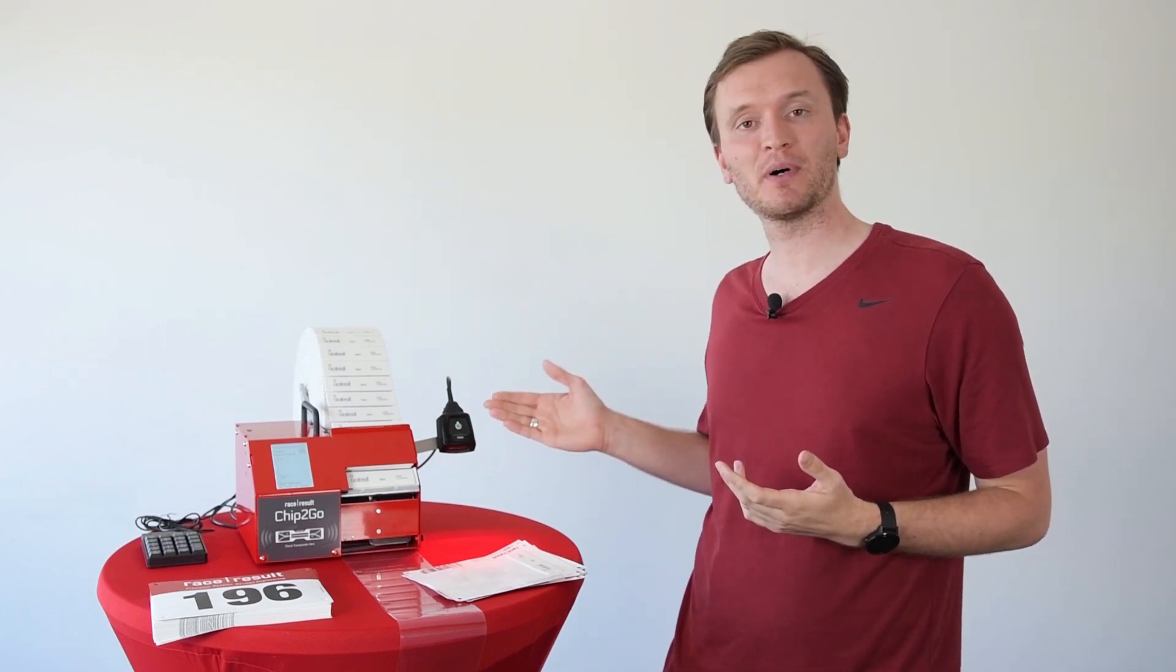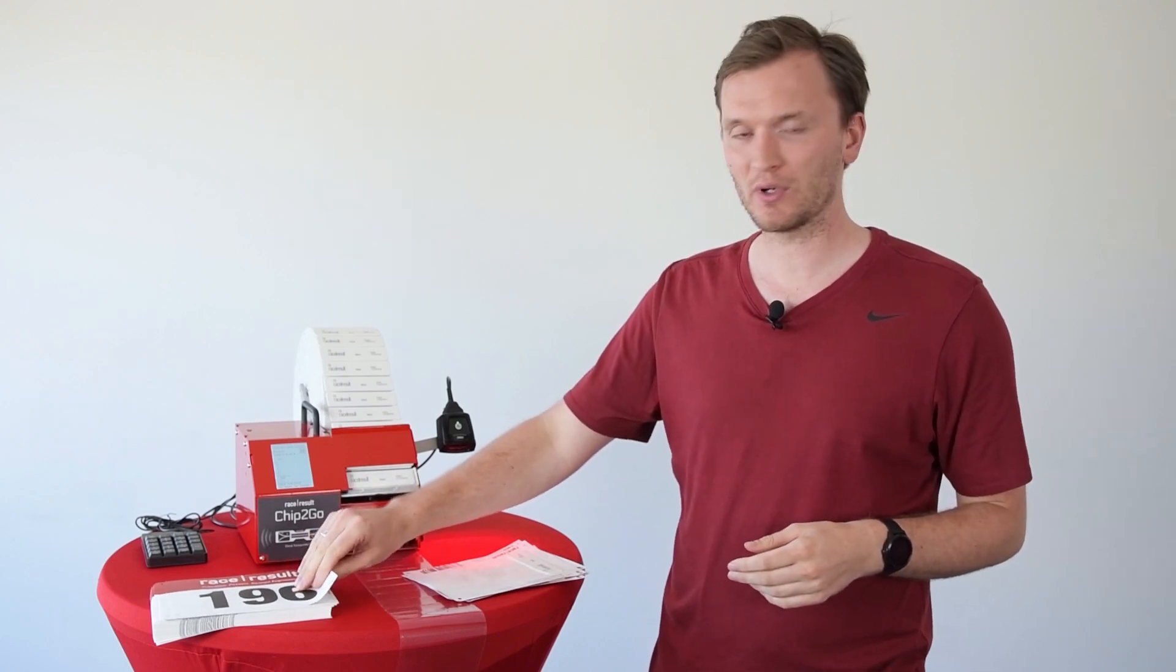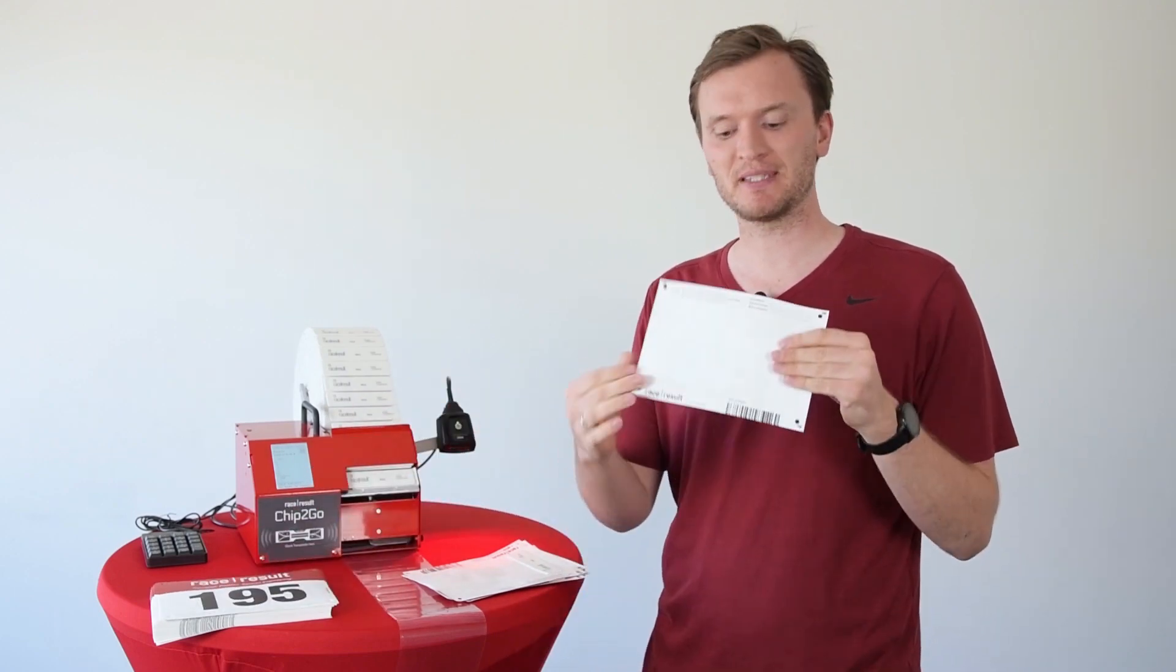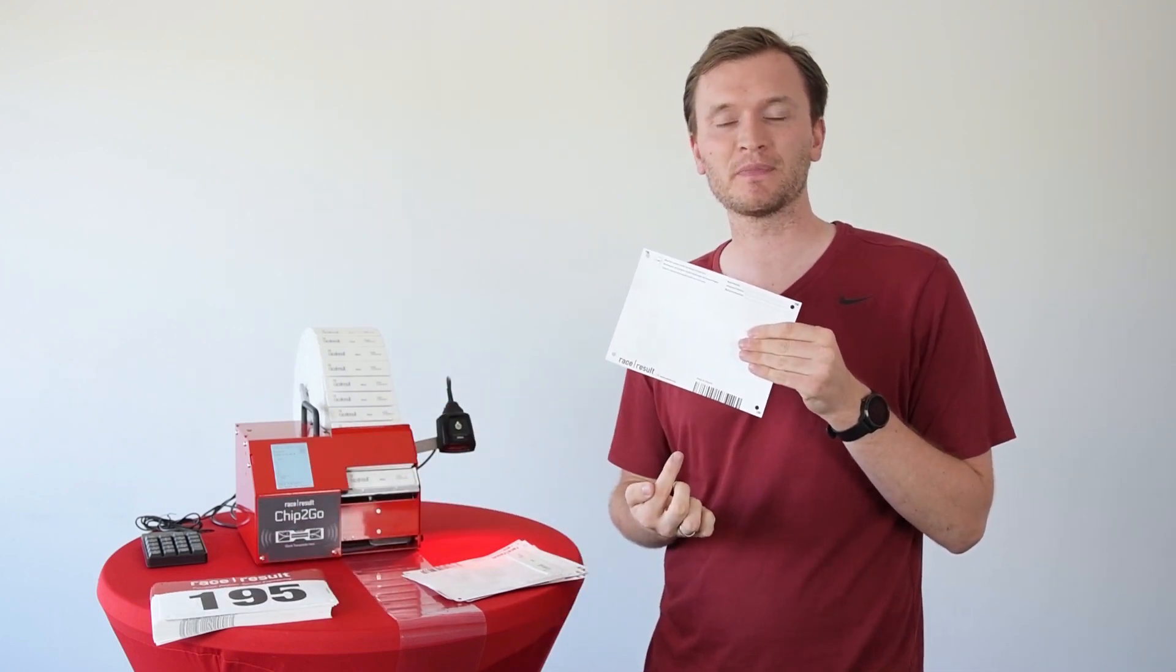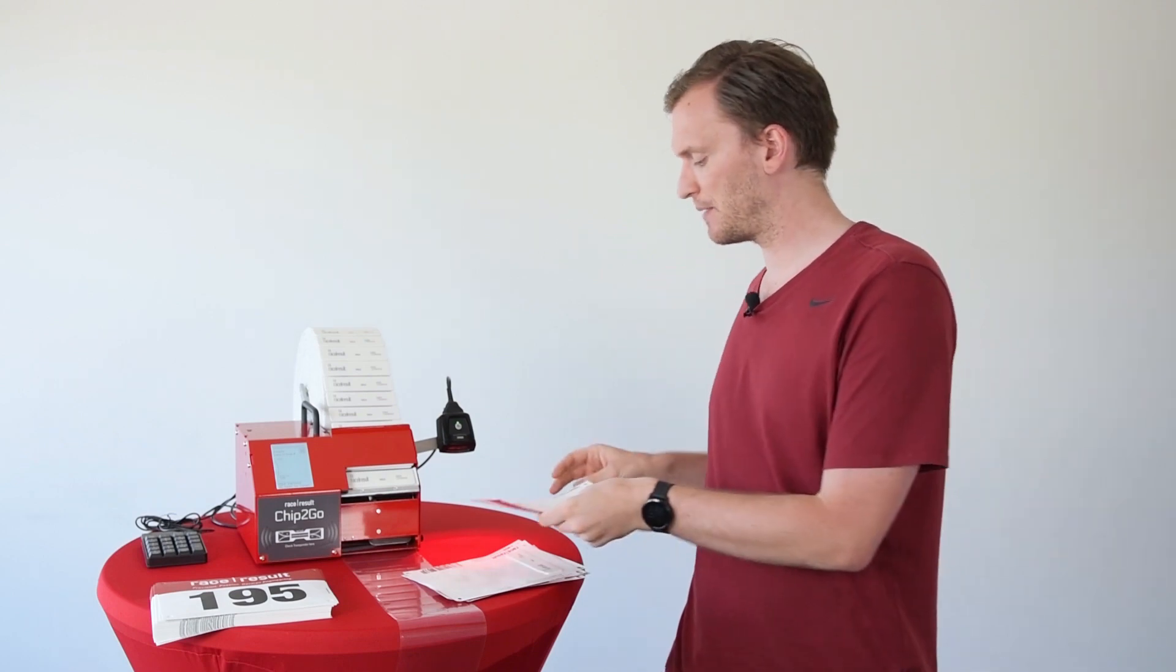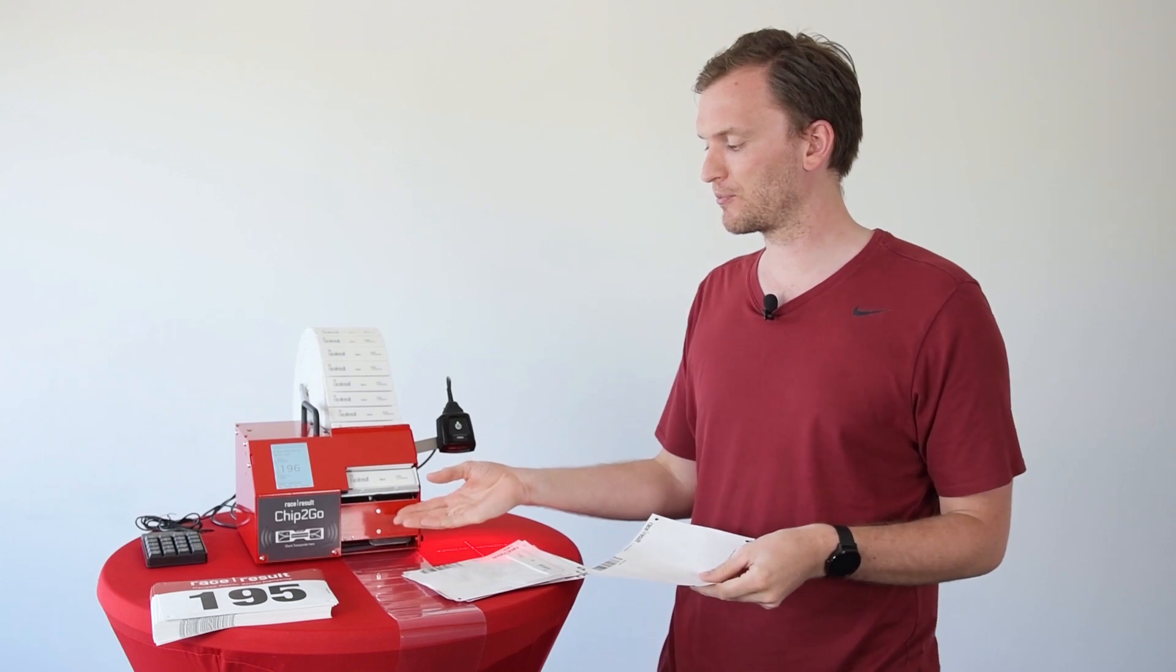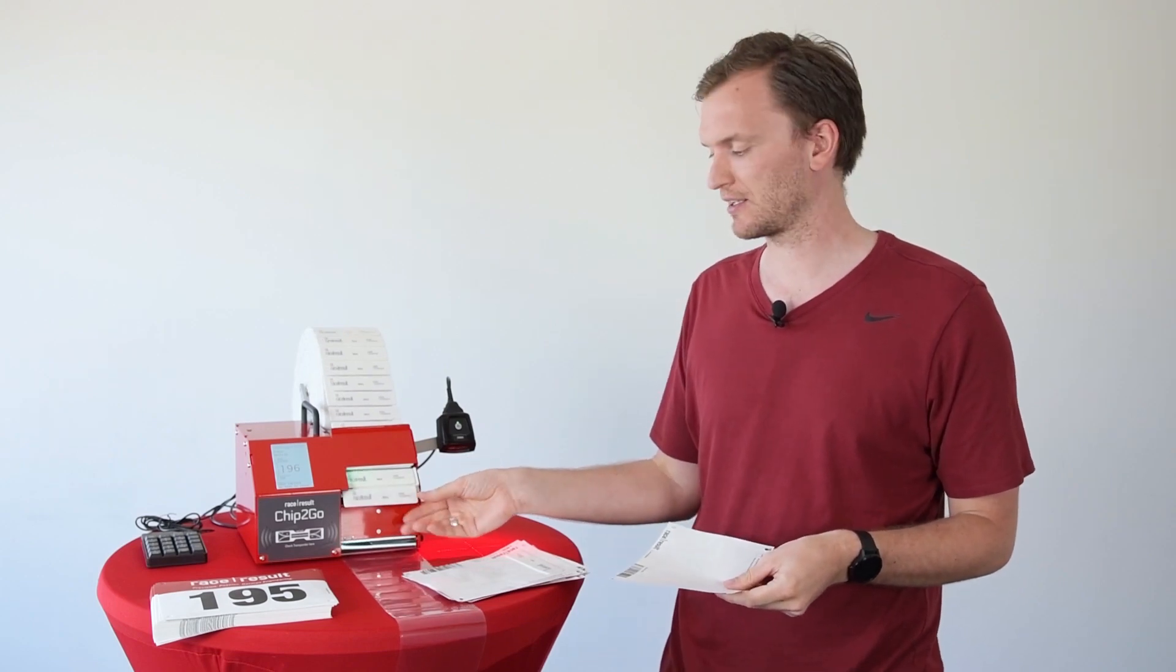That's where our optional barcode scanner comes in handy. All I need to do is make sure my bibs include a barcode in the correct format, and when ordering bibs from us you can request this, then simply scan the barcode and the Chip2Go will produce the chip ready for me to stick to the back of the bib.